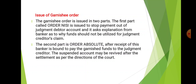A garnish order involves two parties. The first portion of issuing the garnish order is called Nasi. It is issued to stop payment out of the judgment debtor's account and it asks for an explanation from the banker as to why the funds should not be utilized for the judgment creditor's claim. The second part is the order absolute — after receipt of this, the banker is bound to pay the garnished funds to the judgment creditors. The suspended account may be revived after settlement as per the direction of the court, that is the decree under the court of law.